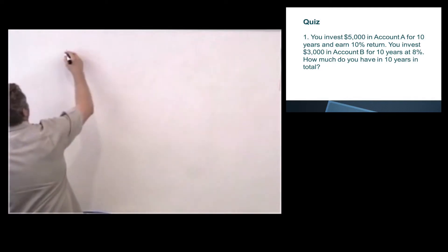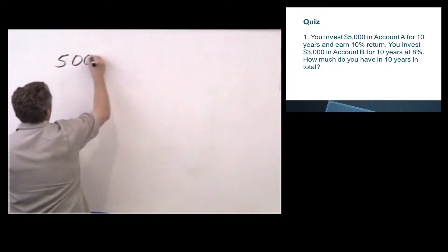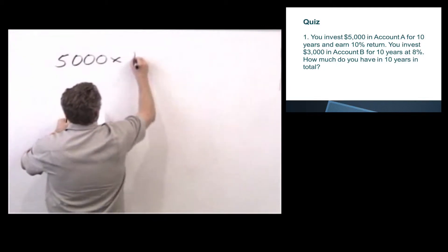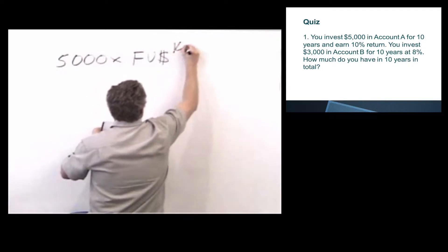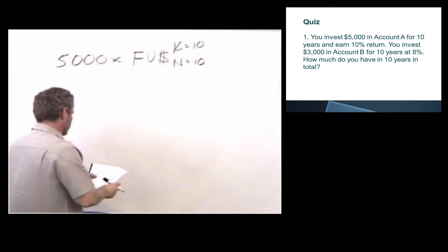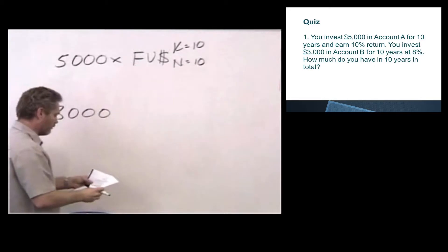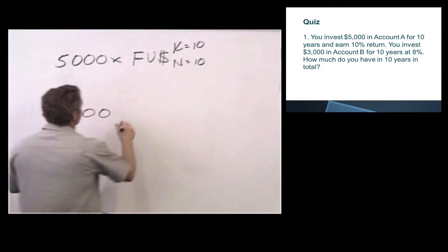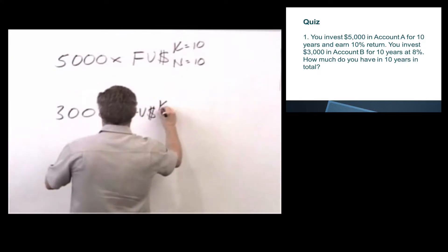We don't need to necessarily draw these boxes. Hopefully we've got that down a little bit. So we're going to go $5,000 times future value of $1, K equals 10, N equals 10. And we also then invested $3,000 for 10 years. That's future value of $1, K equals 8, N equals 10.